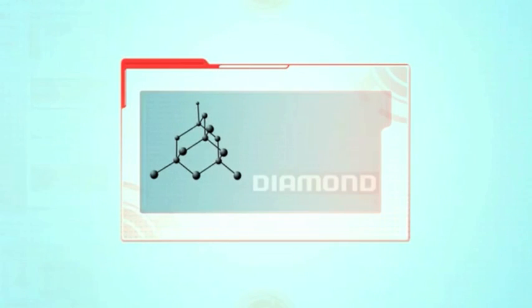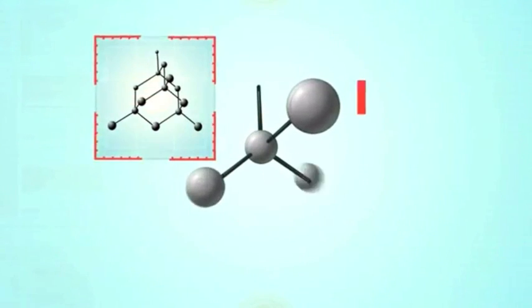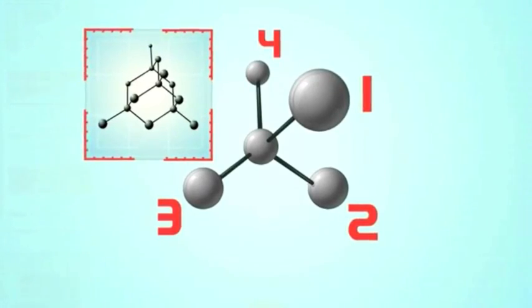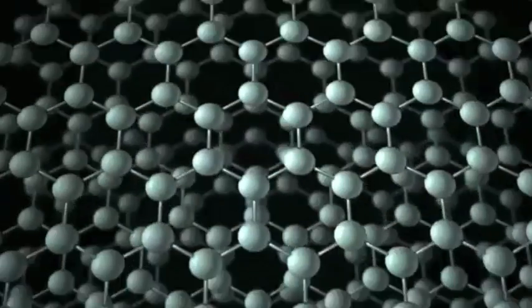In fact, electrons move so quickly through graphene that the laws of quantum physics do not apply. Instead, scientists use quantum electrodynamics to study the physical properties of graphene.